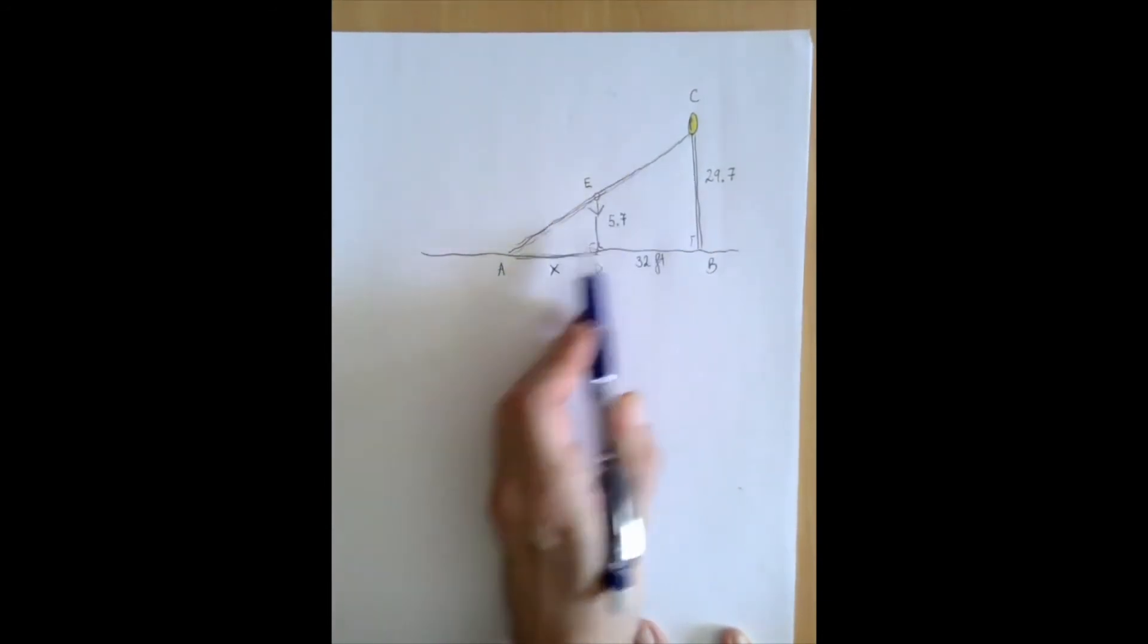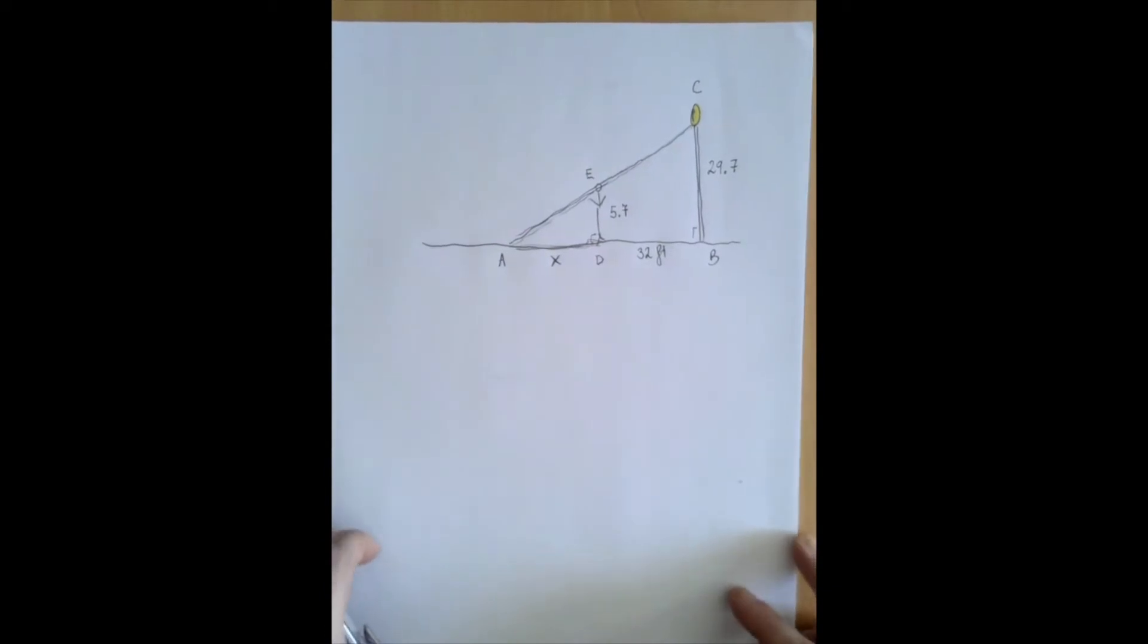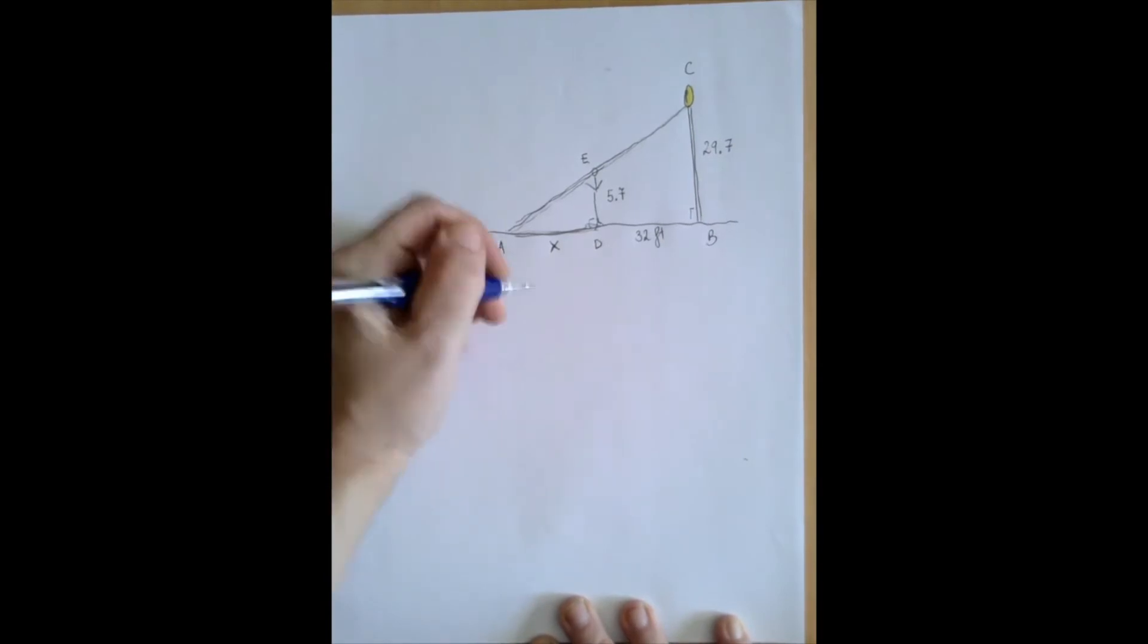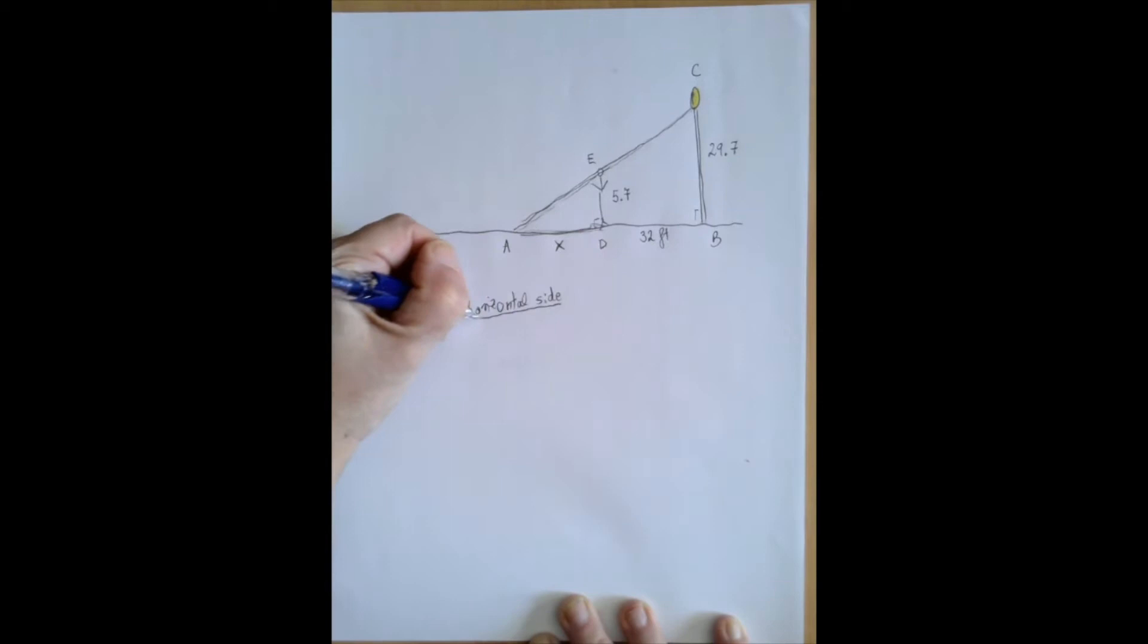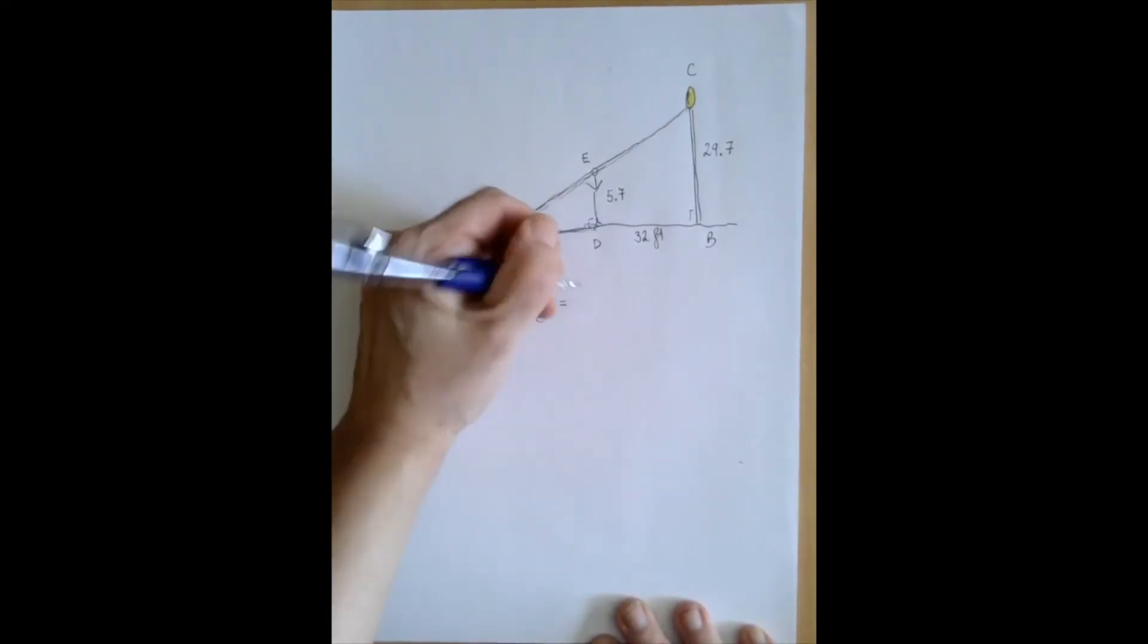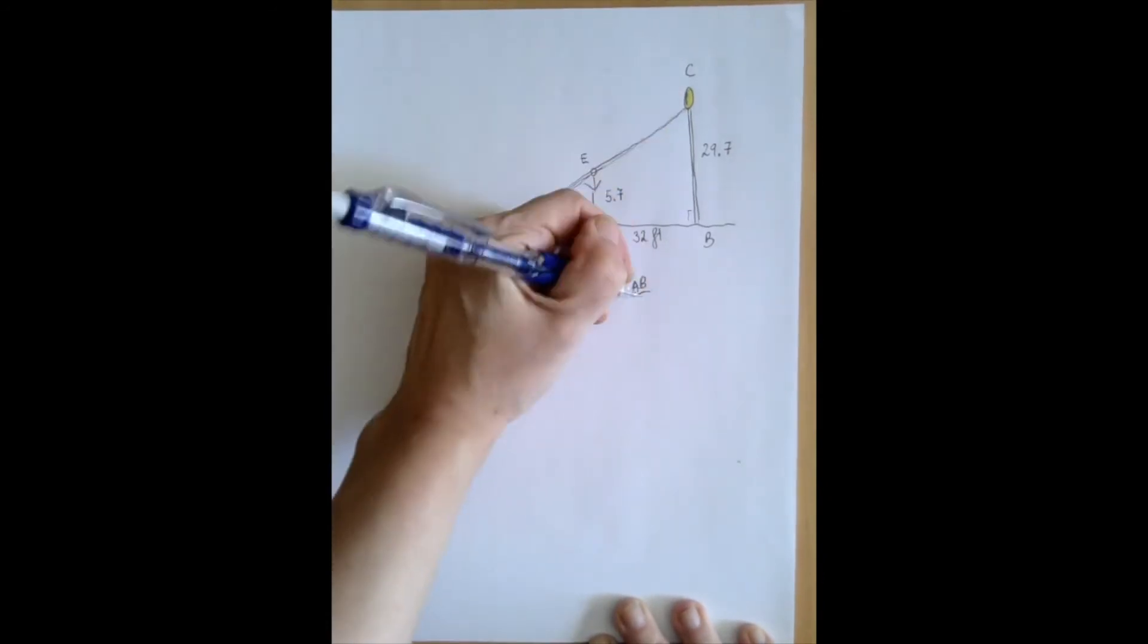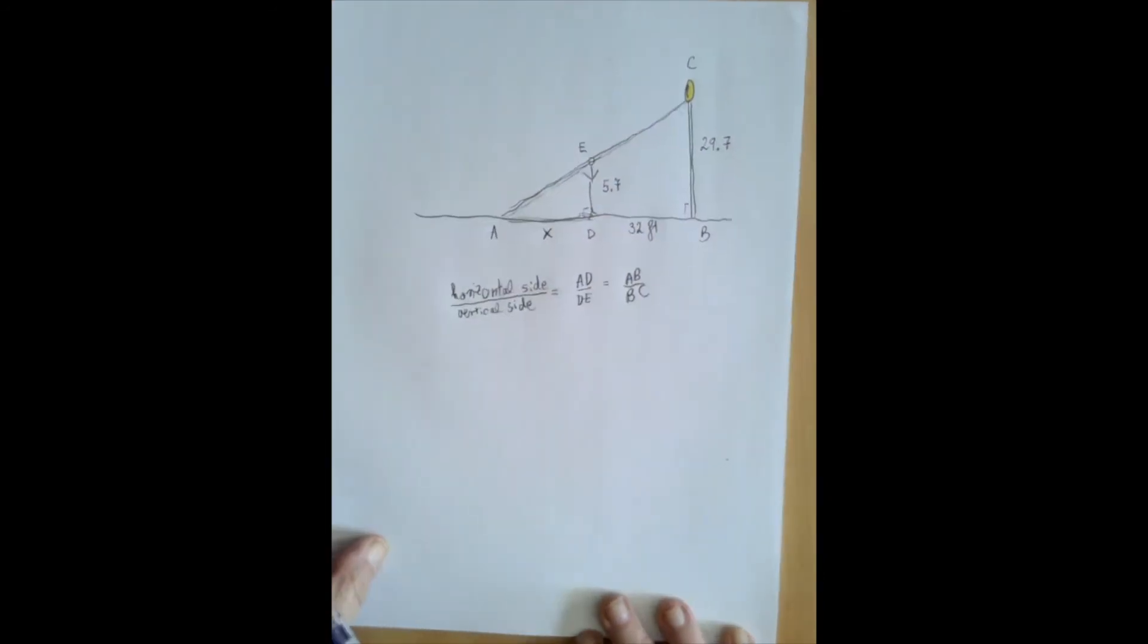The hypotenuses are completely unknown, so they're useless in this particular case. So let us set up a ratio problem that has X in the numerator. So let's say in both triangles, we're going to take the horizontal side divided by the vertical side, which is AD over DE in the small triangle, and AB over BC in the bigger triangle. So that's the plan.